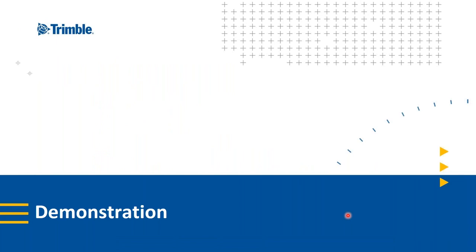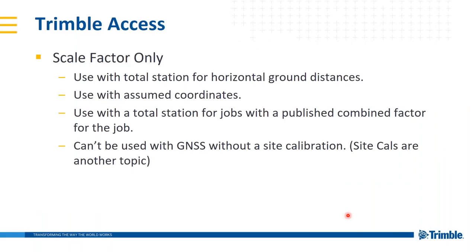That was a quick basic introduction. The light bulb went off for me when I saw that cross-section example: two measurements on the ground doesn't equal one distance — there are up to three distances, and we're just using scale factors to go back and forth. Now I want to do more practical demonstration — looking at Trimble Access and then Trimble Business Center, and how do I set my coordinate systems up to get the results I want. The first is scale factor only, which isn't really even using a coordinate system.